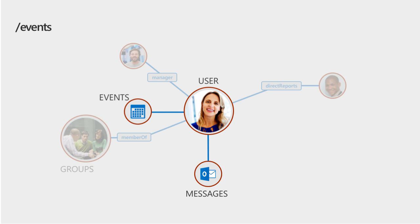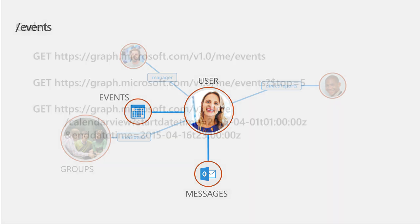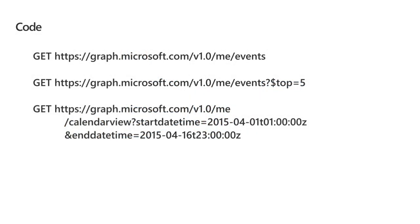You can also access events by going to the events endpoint. You can get the top five events or see events for a specific calendar view by passing in filters for the start and end date-time.